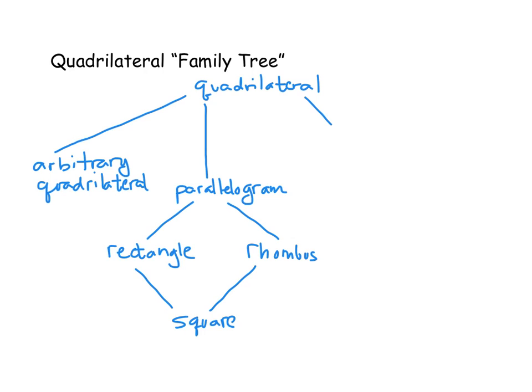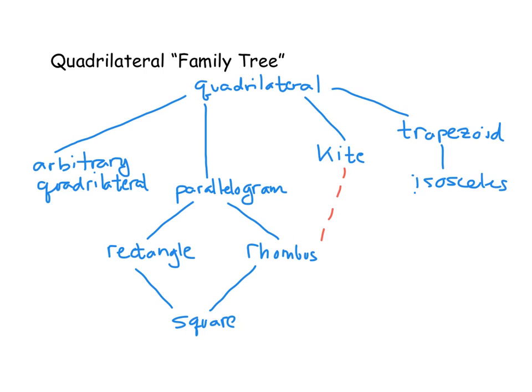Below rectangle and rhombus, we put the square, because a square is both a rectangle and a rhombus — it has the four right angles that a rectangle does and the four congruent sides that a rhombus does. Next, there's a branch for the kite, which has two adjacent pairs of congruent sides. In certain books, a rhombus is actually considered to be a type of kite, so there's a dashed line connecting them depending on the textbook. Over on a separate branch are trapezoids with exactly one pair of parallel sides, and below that, isosceles trapezoids with congruent legs.